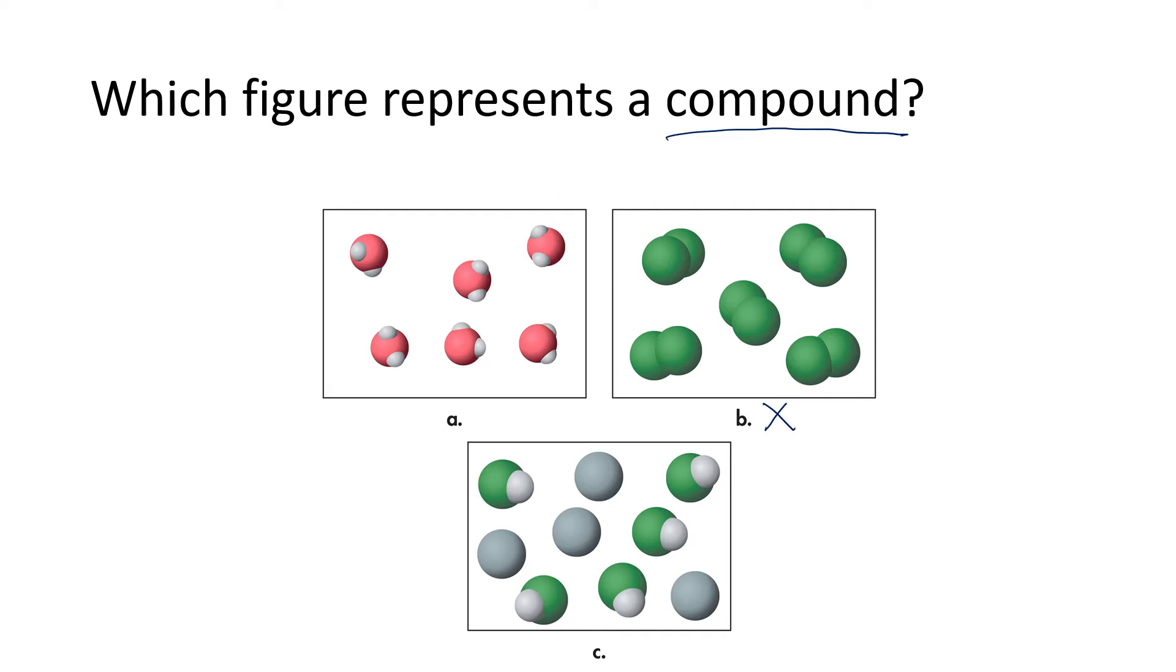So that's going to be either answer A or answer C. In answer A, we have for each one of these molecules drawn, we have one red atom and two whites. So that's looking like it could be a compound. And then if we look at answer C, some of the representations have one green and one white. The other representations have just one silver. So that's not going to be a compound. Everything would have to be the same, the same atoms and the same ratios to be a compound.